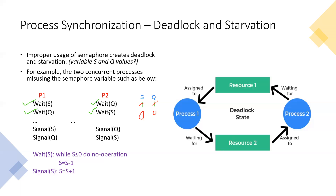This is like a classroom example: if a class is occupying a particular slot, no other teacher or student can use it until the session ends. Now, P2 also tries wait(S). What is the value of S? S is 0. Is 0 less than or equal to 0? Yes — condition true. So do no operation — wait. Block the process until and unless this semaphore variable can be accessed and becomes free.